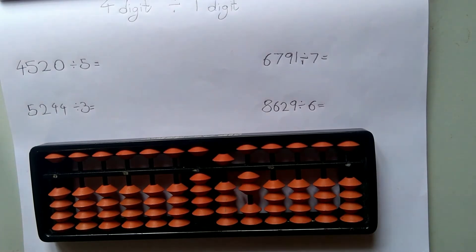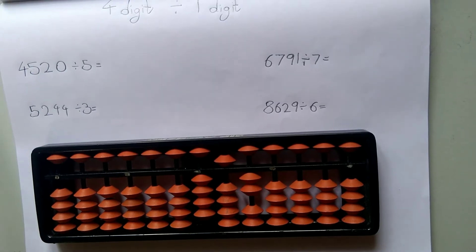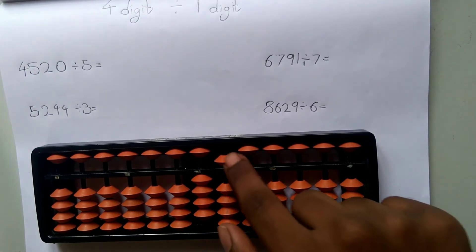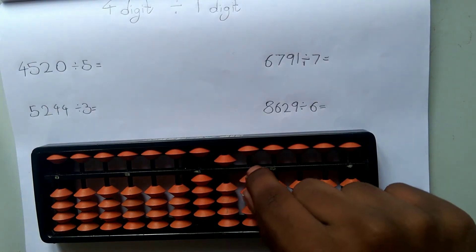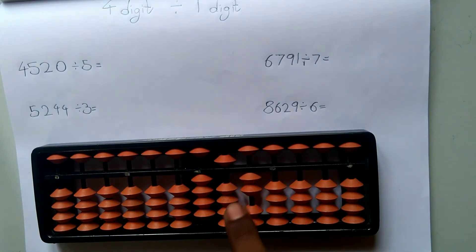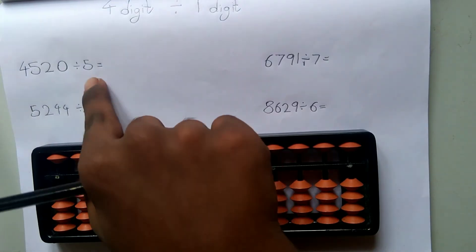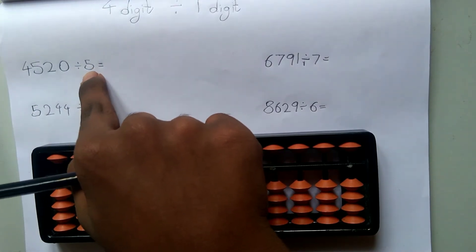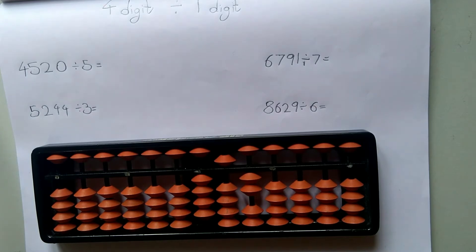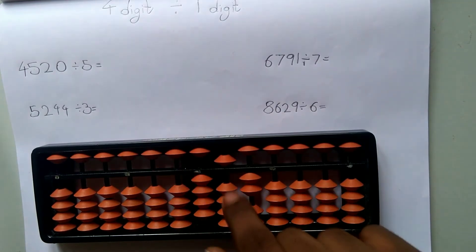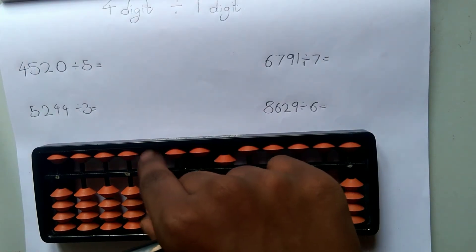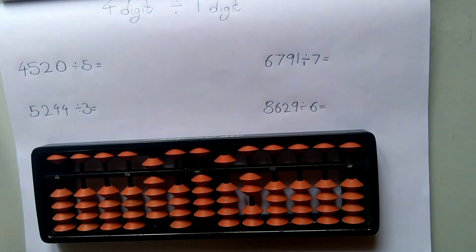Let's include the next digit as well — then it becomes 45. 45 is greater than 5, so we can use it. Since we are including the 100s rod as well, our answer should also be represented on the 100s rod. So 45 divided by 5 — here 5 is also called the divisor. 45 divided by 5 is 9 and there is no remainder. 5 nines are 45, so we place 9 on the 100s rod in the answer set, and subtract 45.